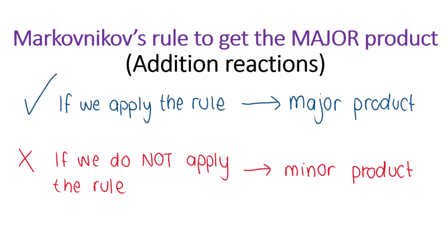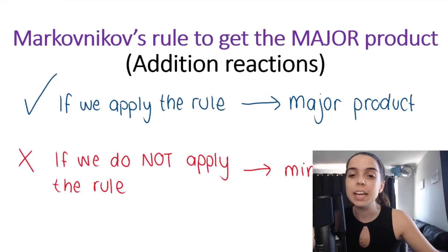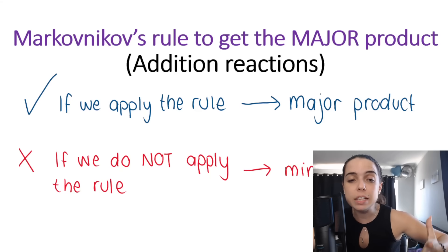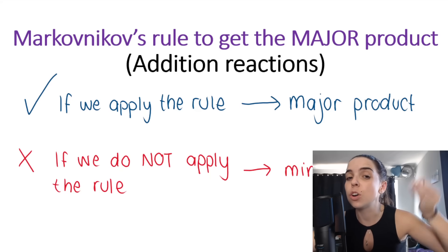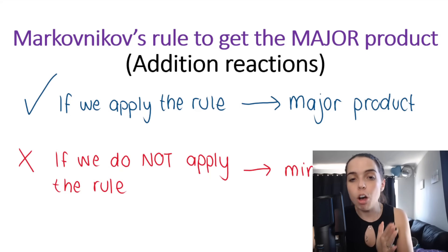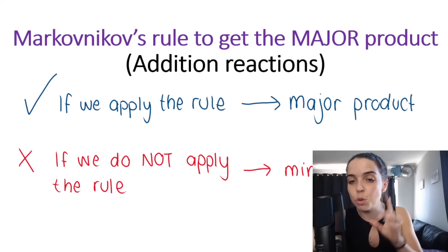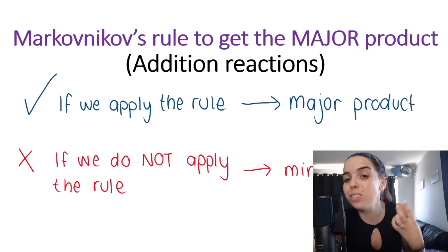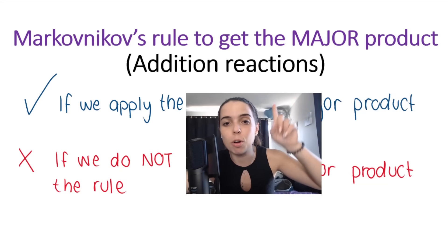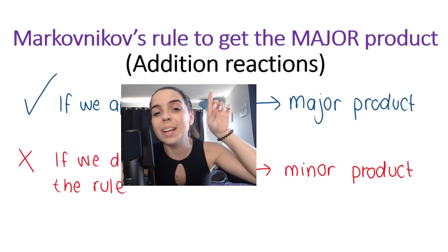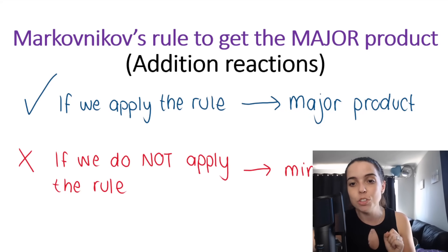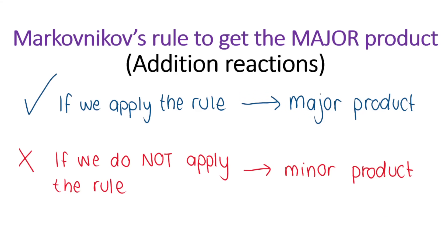When dealing with addition reactions, we need to follow Markovnikov's rule. In our curriculum, you don't have to state the rule — you just need to know how to apply it. When you apply Markovnikov's rule, you get the major product, and Markovnikov's rule is used for addition reactions only. If we don't apply the rule — if we do the opposite of what the rule says — we get the minor product.